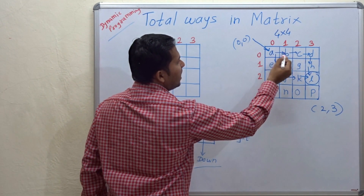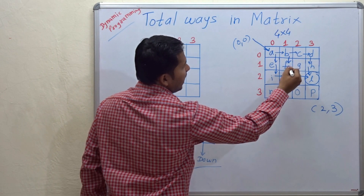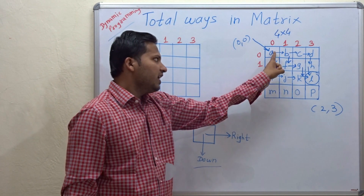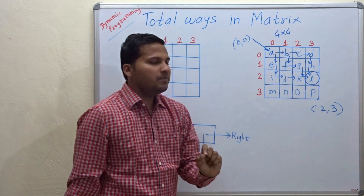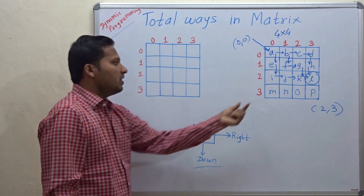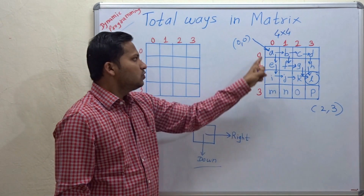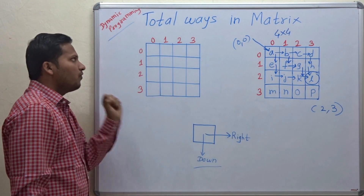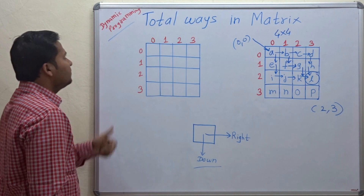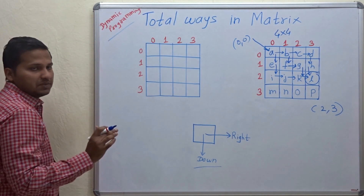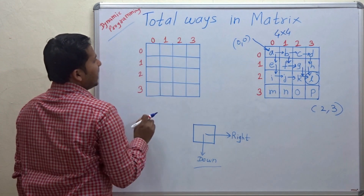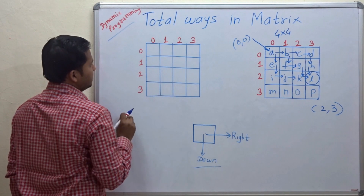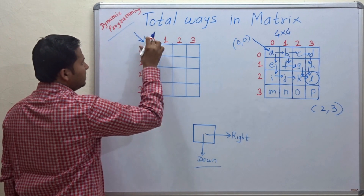One more way is from A to B, B to F, F to G, G to K, and K to L — we can also reach with this path. So in this way, for each cell there are a number of ways to reach that cell, and we are going to find out those number of ways. For that we are going to use dynamic programming. We are going to find out the number of ways for each cell in the matrix, starting from cell 0,0.